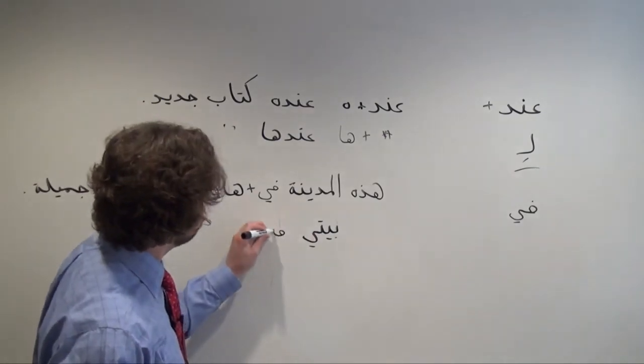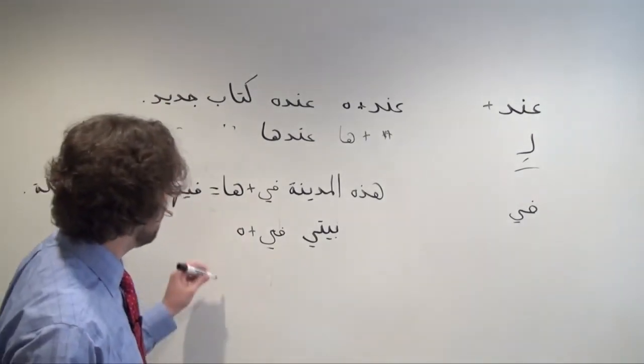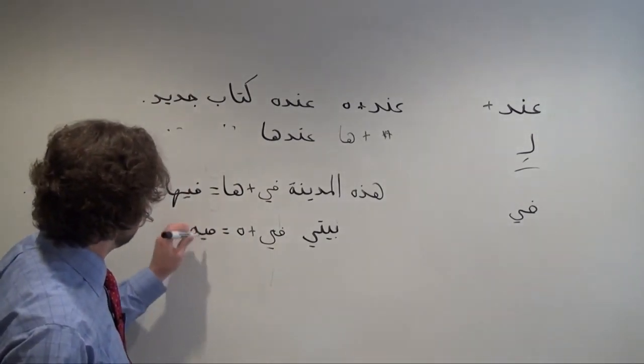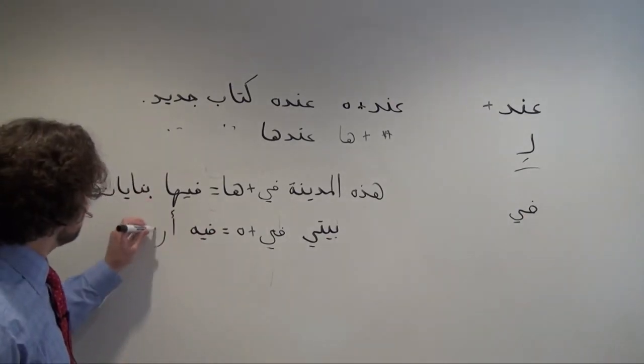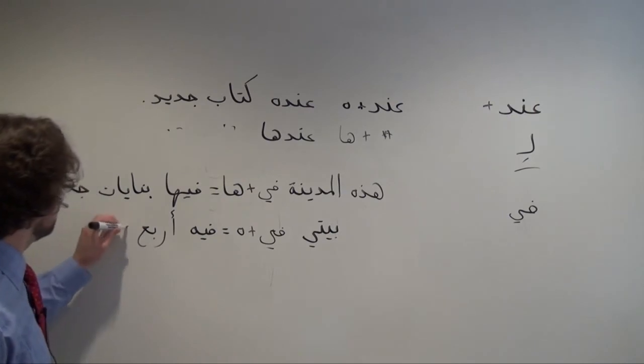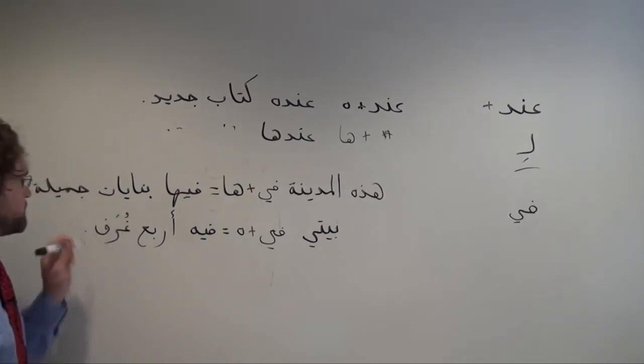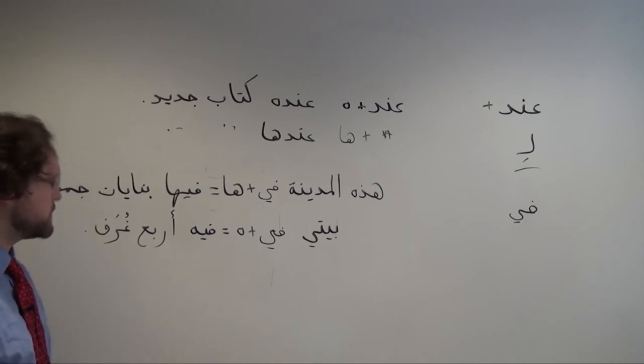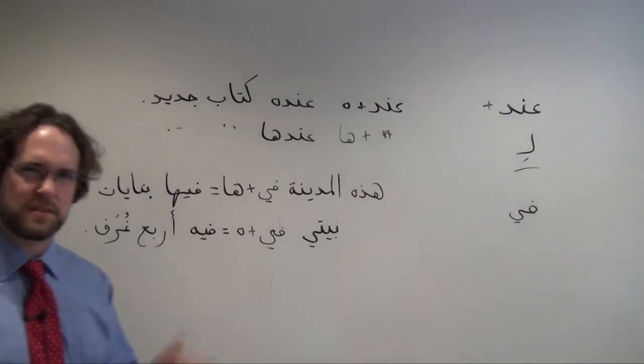and then I'm going to add that masculine third-person suffix, هَا, and wind up with فيه أربعة غرف. غرف. In my house, at my house, are four rooms, right? But I can't use عند, and I'm probably not going to use لِ because they're physical things, right?